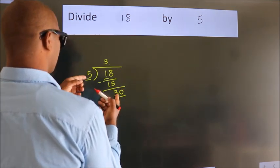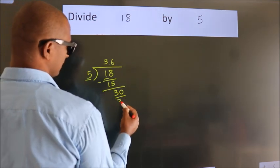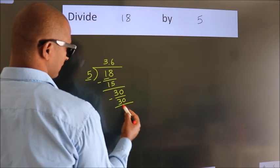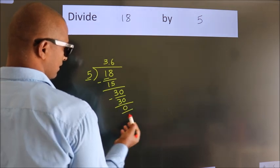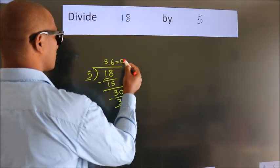When do we get 30? In 5 table. 5, 6, 30. Now we subtract. We get 0. We got remainder 0. So this is our quotient.